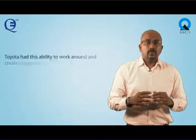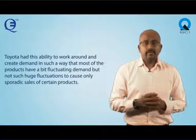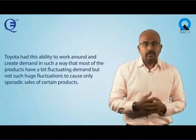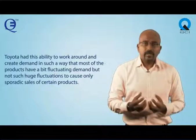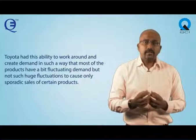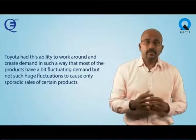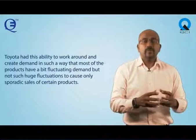Toyota had the ability to manage demand in such a way that most of its products have some fluctuation, but not such huge fluctuations as to cause only sporadic sales of certain products. However, the majority of industries face sporadic demands, and they do have the raw material to satisfy that demand when it arrives.